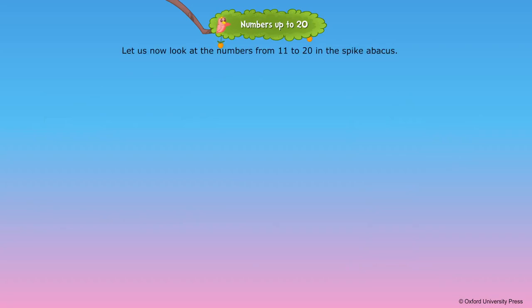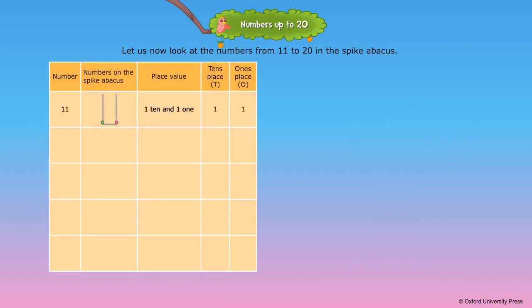Let us now look at the numbers from eleven to twenty in the spike abacus. Eleven: one ten and one one. Twelve: one ten and two ones.